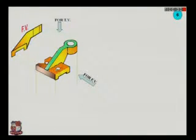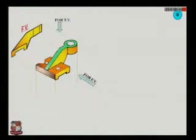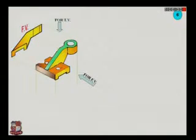Now in the top view, these holes — hole number 1 and hole number 2 — can be observed clearly. But the slot in the base will not be observed clearly; it is invisible. So the line of this slot in the orthographic projection for the top view will come as hidden.